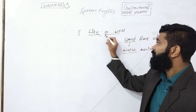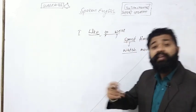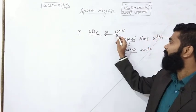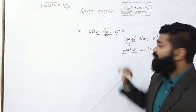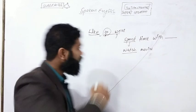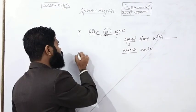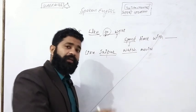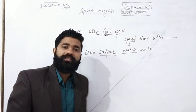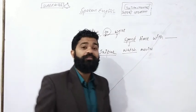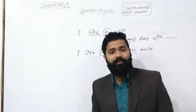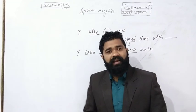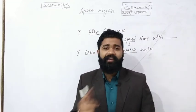एक बार दुबारा repeat करता हूँ — 'like' के बाद में 'to' use तब करना है जब आप आगे कोई भी verb यानि कोई भी काम बोल रहे हो, जैसे कि आना, जाना, बात करना, सुनना, movie देखना. अगर आगे work नहीं आ रहा बल्कि चीज़ें आ रही हैं, तो sentences normal होंगे. जैसे — I like Jaipur. I like iPhone. I like Samsung. I like history.